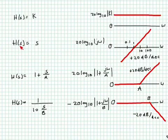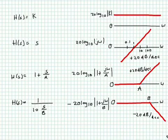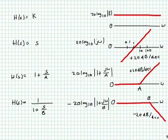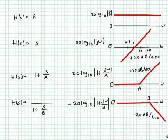Another term we want to look at is the system function H(s) = s. The frequency response magnitude is 20 log10 of |jω|, which is just 20 log10(ω). That is a line that constantly goes up at a rate of 20 dB per decade, forever — from the smallest value of ω all the way up to the largest. The slope is always 20 dB per decade, and we see it passes through 0 dB right at ω = 1, because 20 log10(1) = 0.